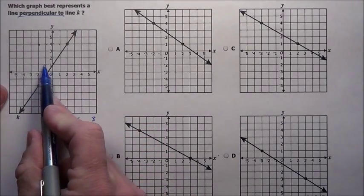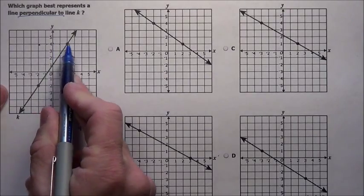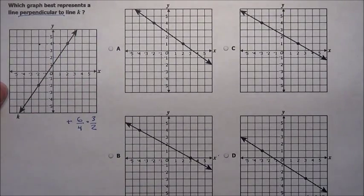So we notice it goes up 1, 2, 3, 1, 2, 1, 2, 1, 2, 3, 1, 2. So rises 3, runs 2.